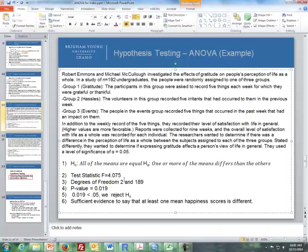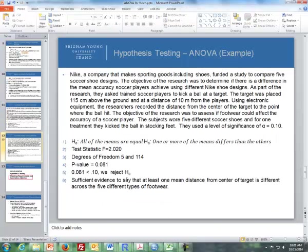We use the F test statistic to get our results. Let's go through another example. Nike, a company that makes sporting goods including shoes, funded a study to compare five soccer shoe designs. The objective of the research was to determine if there is a difference in the mean accuracy soccer players achieve using different Nike shoe designs.